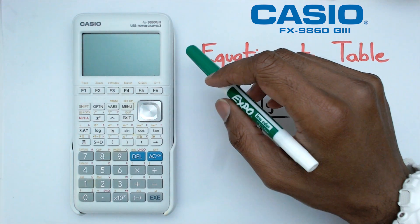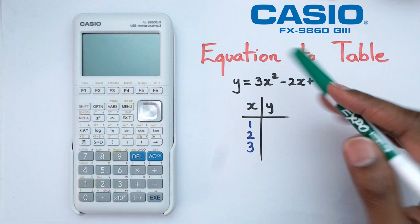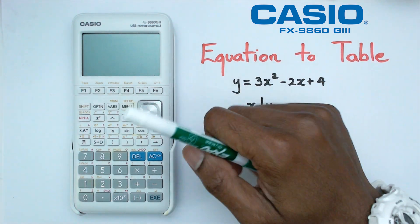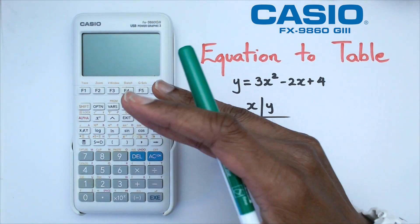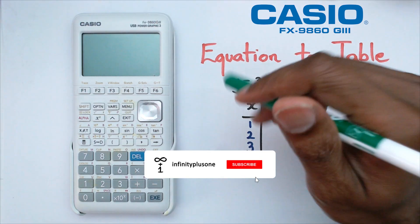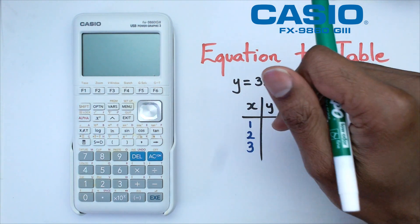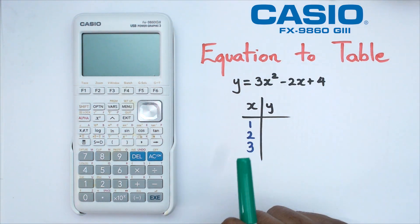Hey folks, welcome to another how-to Casio video. In this video we're going to be looking at how to go from equation to a table on this particular Casio graphics calculator. We're going to be looking at not just the table but also how to figure out f(x) for this particular equation, for this function.